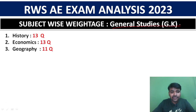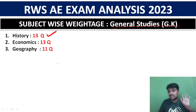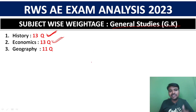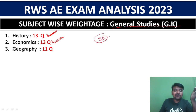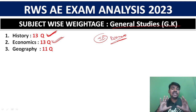Now moving to the GS paper. History is important — people neglect it but there are 13 questions. Economics questions also appear, as seen in previous different exams.